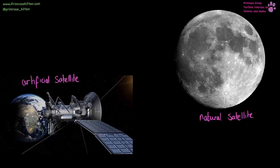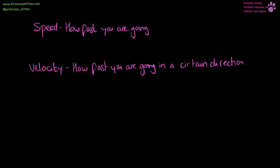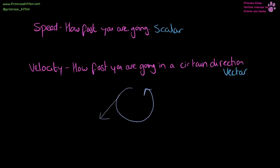An artificial satellite is something we've put into orbit around Earth; a natural satellite is something like the moon. Satellites maintain their orbit due to gravity. There is an important distinction: speed is scalar, velocity is vector. Something orbiting at constant speed is constantly changing direction, so its velocity is always changing — you can have changing velocity while maintaining the same speed.